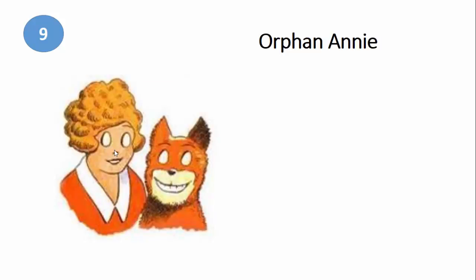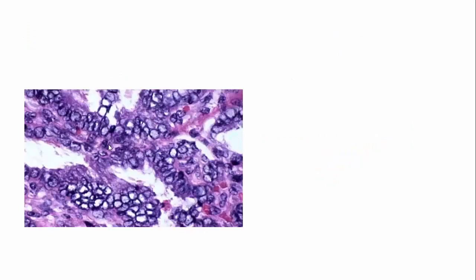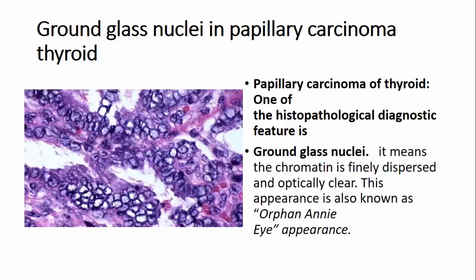The ninth and last one is Orphan Annie. This is a character from an American comic strip called Little Orphan Annie, whose vacant-circle eyes were a distinguishing feature. In papillary carcinoma of the thyroid, the nuclei resemble Orphan Annie eye nuclei due to the ground-glass appearance of the nuclei, which looks like the vacant eyes described in the cartoon — that's why it is known as the Orphan Annie eye appearance.